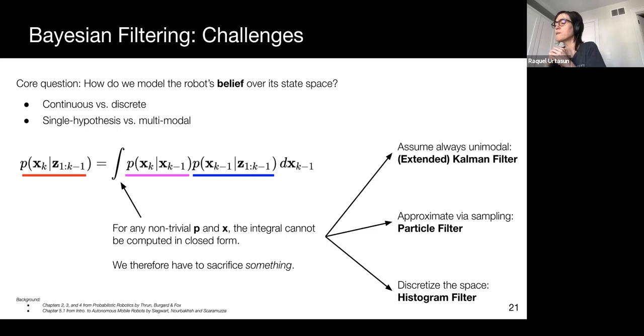So to recap, we can elegantly model recursive Bayesian estimation using a pure mathematical form. In practice, we have to make some trade-offs in order to implement this in a real robot. A Kalman filter is able to produce convenient continuous closed form estimates, but it is limited in its modeling power.